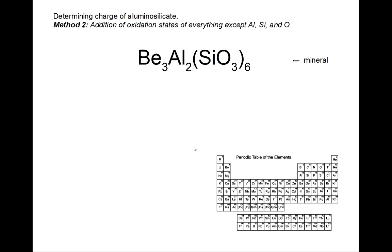The second method involves adding the oxidation states of everything except the aluminum, silicon, or oxygen and is usually shorter because there's usually less, but sometimes it's not. It depends whether there's more than three other elements present.